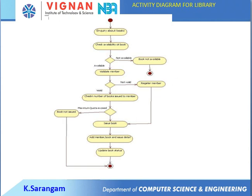The activity diagram for the library management system begins with a student requesting books and checking availability. If the student is valid, the transaction continues; if invalid, the student must register. A first-time student goes through registration, while an existing student continues directly to the transaction. If a book is available within the student's quota, it is issued and records are updated. Otherwise, the book is added and details are entered and updated.